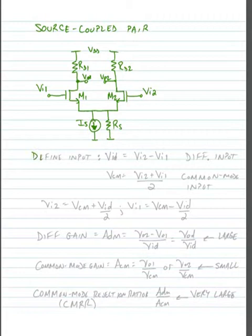We define our input as differential VID equals VI2 minus VI1. We can also define what we call a common mode input VCM which is equal to the average of the two voltages at the input, VI2 plus VI1 divided by 2.